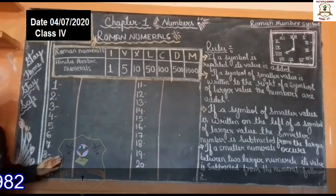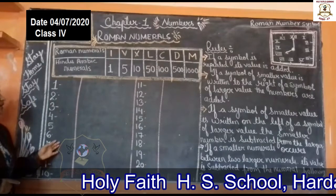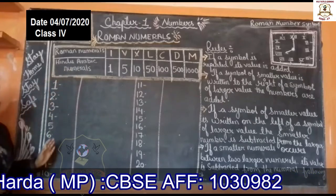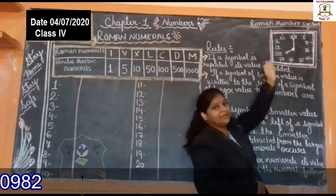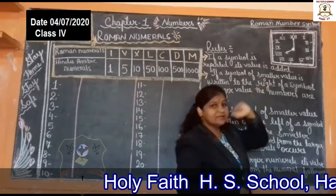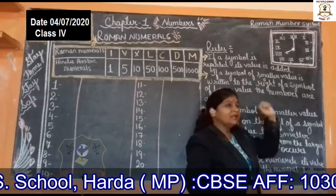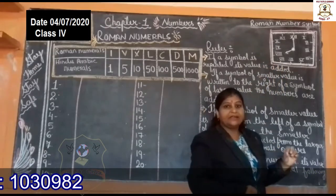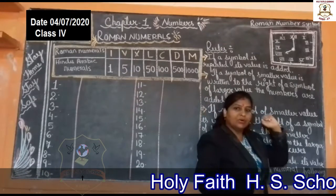I have written some numbers here. These numbers are written according to Hindu-Arabic numerals. Now you see here I made one watch. Inside the box some numbers are there but written in a different way. These are Roman numerals — it is written in Roman numerals.